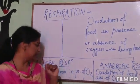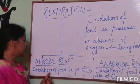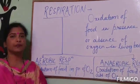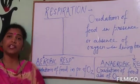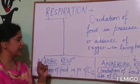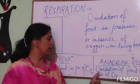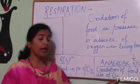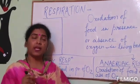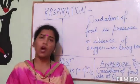Aerobic respiration: as the name explains, it is the oxidation of food in the presence of sufficient oxygen — that is known as aerobic respiration. Anaerobic respiration: the oxidation of food in the absence of oxygen or in the presence of an insufficient amount of oxygen is known as anaerobic respiration.